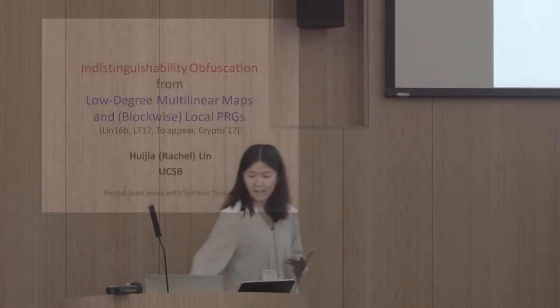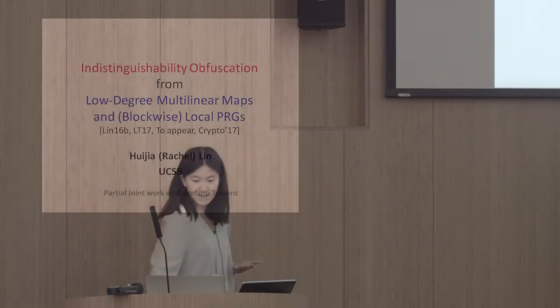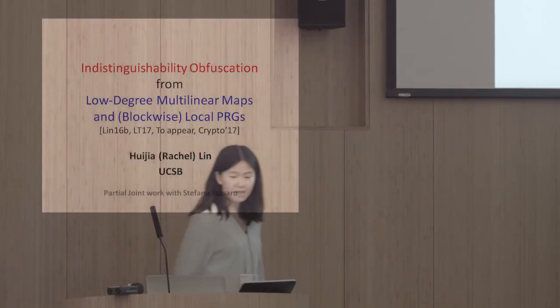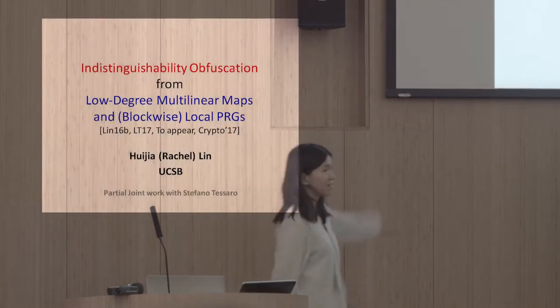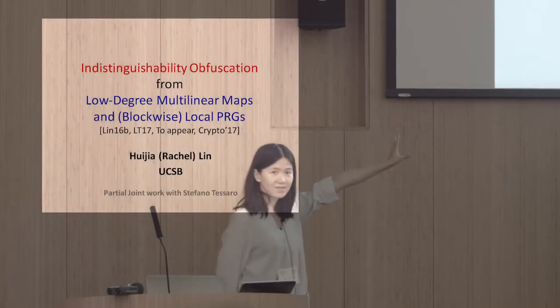What we want to do is compile a circuit into a functionally equivalent one. However, this one obfuscates away the logic embedded in the original circuit. This transformation is done by the compiler that we call the obfuscator, and that's the object we would like to design.